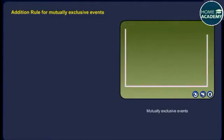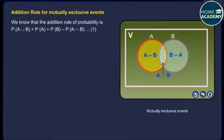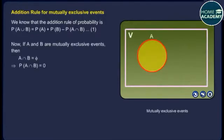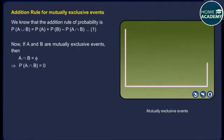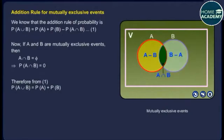Addition Rule for mutually exclusive events. We know that the addition rule of probability is P(A∪B) = P(A) + P(B) − P(A∩B). Now, if A and B are mutually exclusive events, then A∩B = ∅, which implies P(A∩B) = 0. Therefore P(A∪B) = P(A) + P(B).